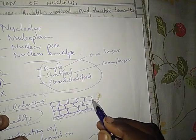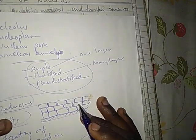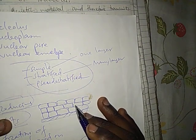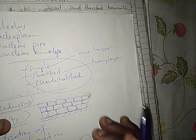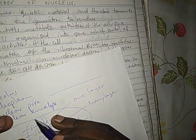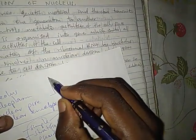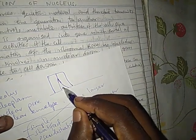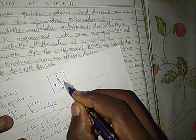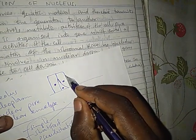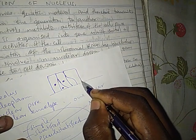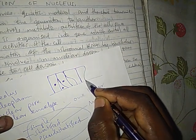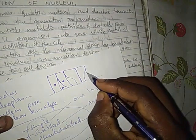In pseudo-stratified, it is seen as if it is two or more layers, but it is actually one layer. For example, in the epithelium of the respiratory tract you can observe this tendency — one cell has reached the top, another cell has just ended here, then another cell has just started partway up.